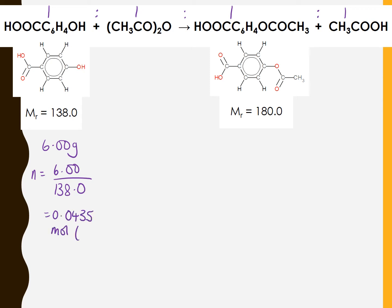That's to three significant figures. This is a 1 to 1 mole ratio, so we would expect the maximum number of moles of aspirin to be 0.0435 moles. The MR is 180.0, so the maximum mass which can be made is the moles, 0.0435, times the MR, 180.0. That should give 7.83 grams.